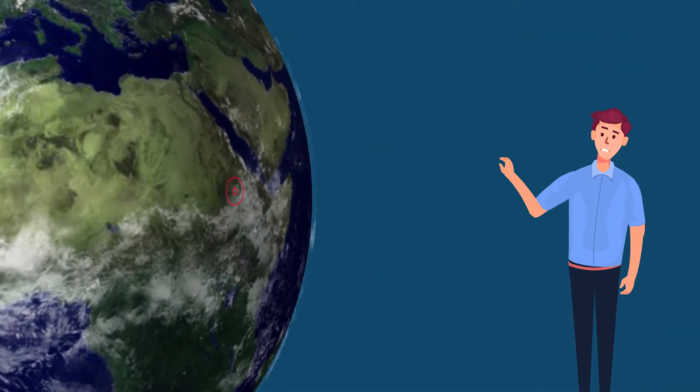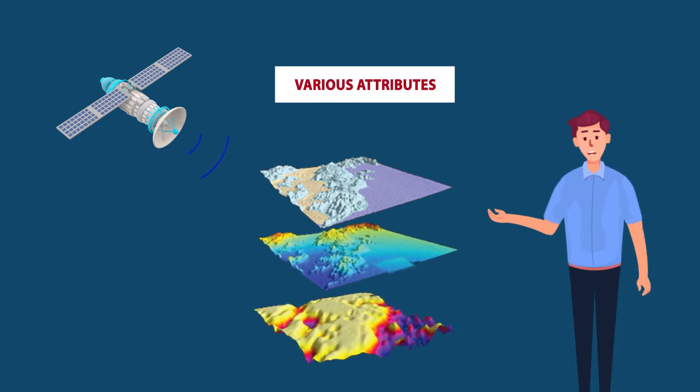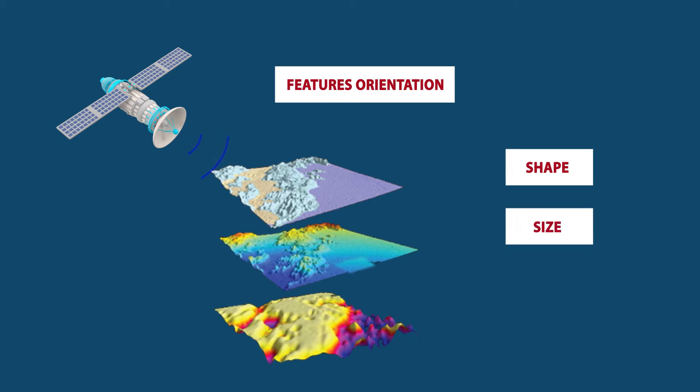Geographic data includes location, characteristics, and various attributes of features on Earth. Characteristics can be feature orientation, shape, size, area, and length.